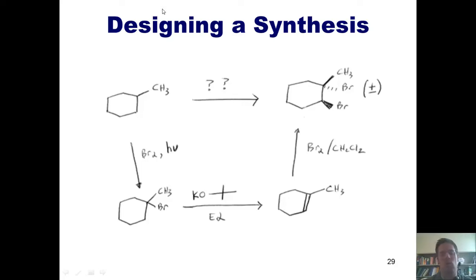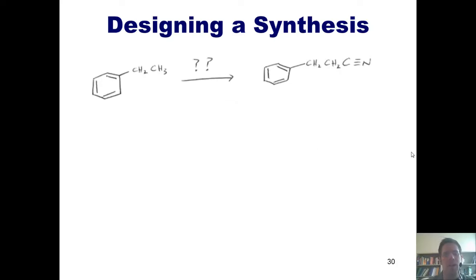This is the way that we could convert this starting material into our final target shown here. All right, now here we find ourselves at our final example. How in the world could I convert this molecule, ethylbenzene, into this final target that has a cyanide group? Once again, I'm going to analyze this starting at my end goal and working backwards one step at a time, retrosynthetically.